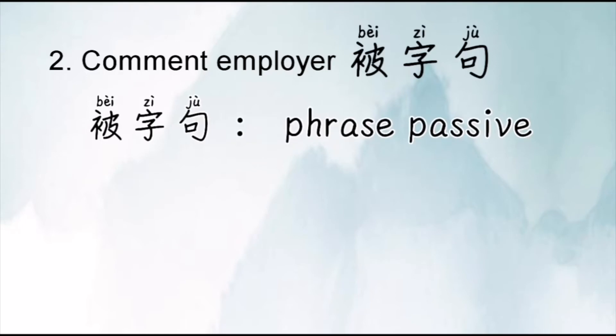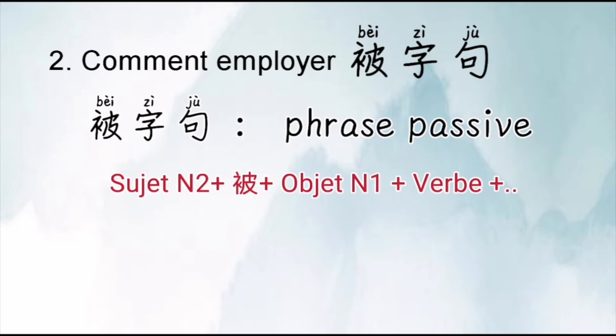Ensuite, on va voir la structure avec BEI, qui est des phrases passives. En effet, on inverse juste le sens du sujet et de l'objet comme dans les BA ZI JU. C'est-à-dire que le nom en tant que sujet dans les BA ZI JU devient objet dans les phrases BEI ZI JU, et le nom en tant qu'objet dans les BA ZI JU devient sujet dans les phrases BEI ZI JU.